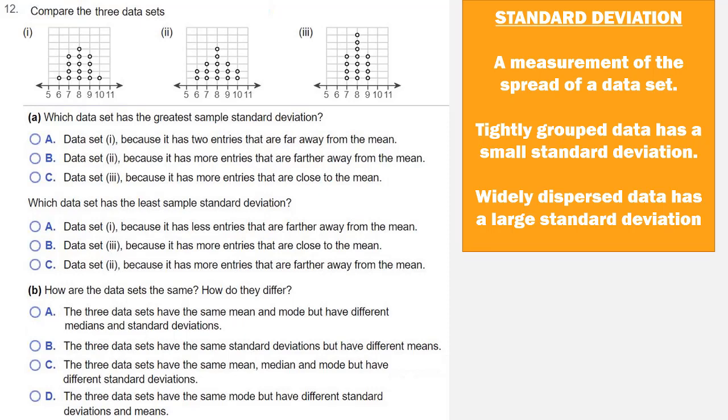So when we compare these graphs, we see that the third graph has most of its values right around the 8, whereas graphs 1 and 2 have their data a little farther apart. So we would expect graph 3 to have the smallest standard deviation.